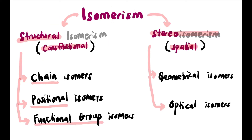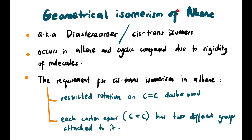Okay guys, before we go further, I just want to emphasize something here. Dulu, kita sudah belajar structural isomers dekat chapter 1 kan? Chain, positional, functional group. But now, kita mau belajar satu lagi isomer untuk alkene special, yaitu geometrical isomers. Seperti optical itu untuk nanti baru belajar.